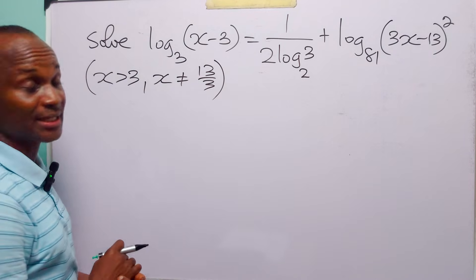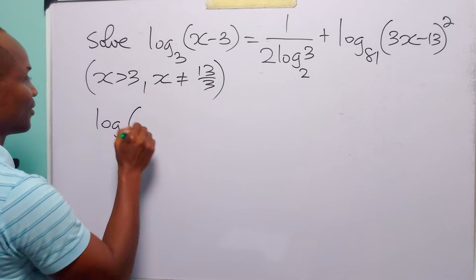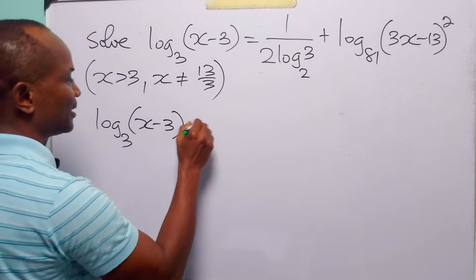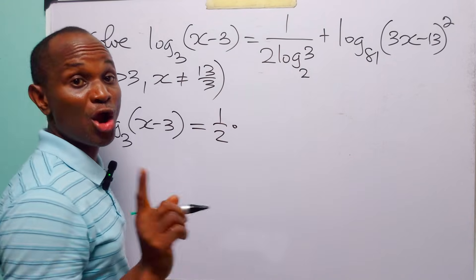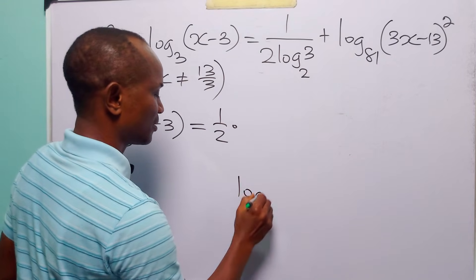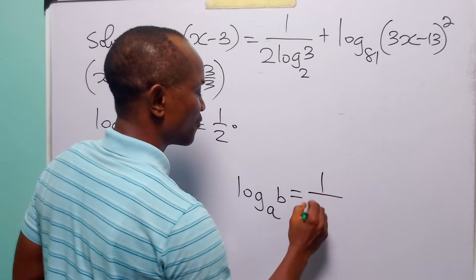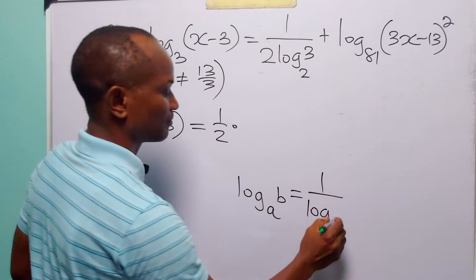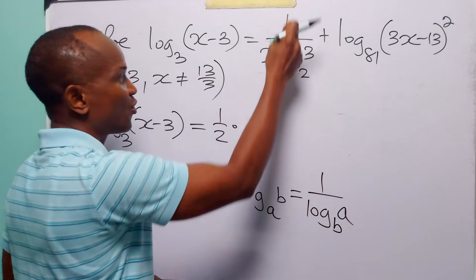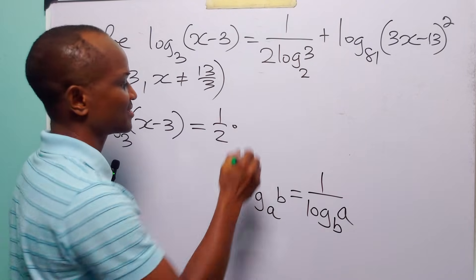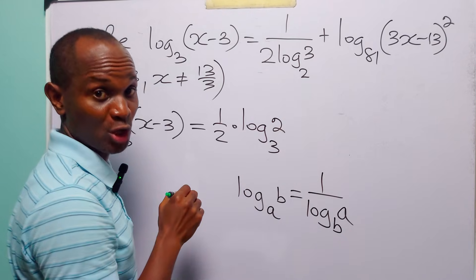Now, let us simplify the equation. We have log base 3 of x minus 3. Using the identity that 1 over log base b of a equals log base a of b, that simply means we can write 1 over log base 2 of 3 as log base 3 of 2.